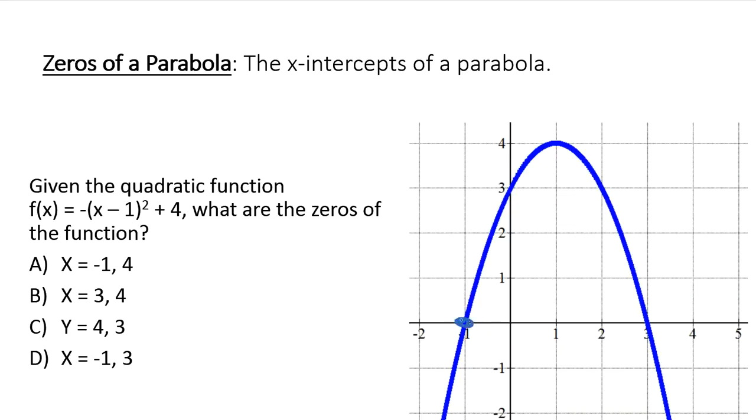Where it intersects the x-axis, the blue hits the x-axis. The x-axis goes horizontally. Where the blue line hits the x-axis, those are our zeros.